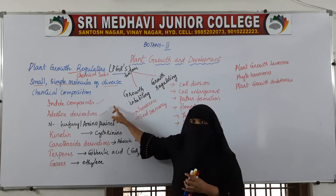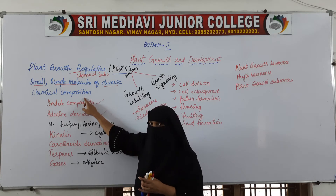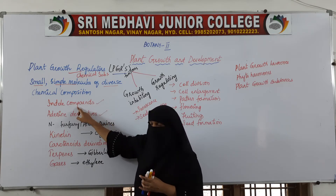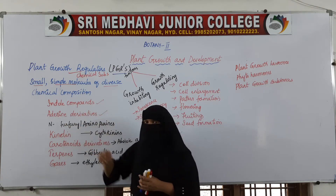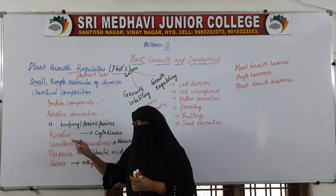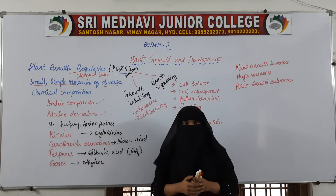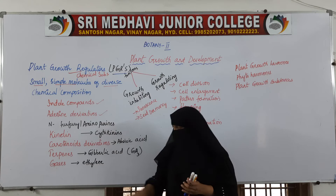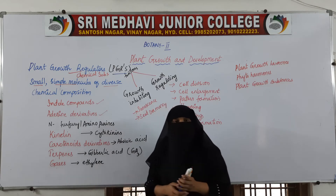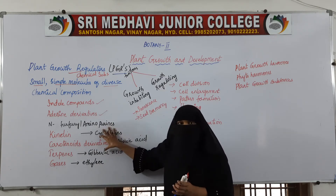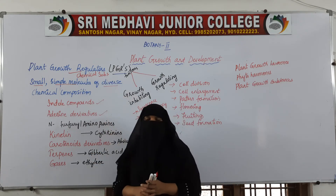Plant growth substances are simple molecules with different chemical compositions. In some molecules, it is indole compounds; in some, kinetin compounds; in some, carotenoid derivatives; in some, terpenes; and in some, the gaseous substance ethylene. Simple molecules of these compositions constitute the plant growth regulators.